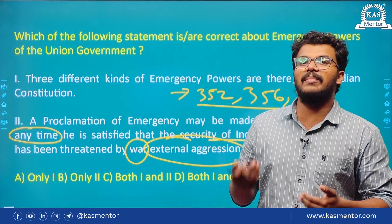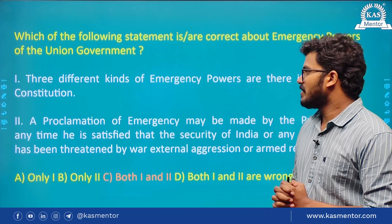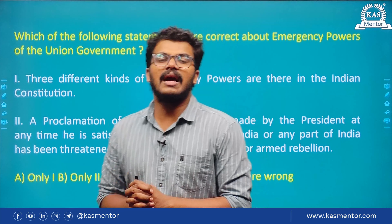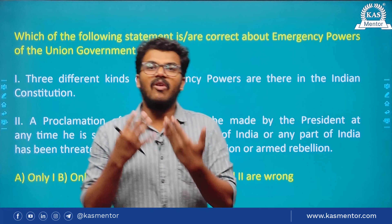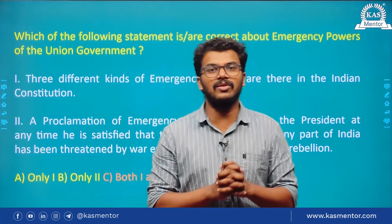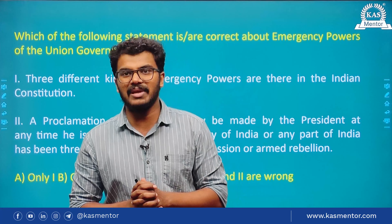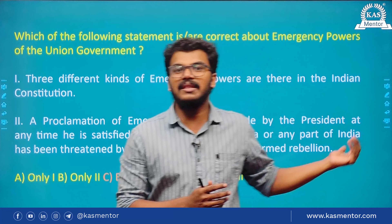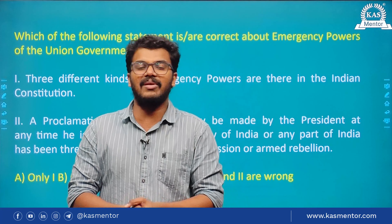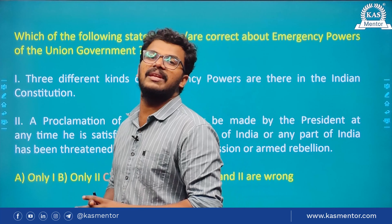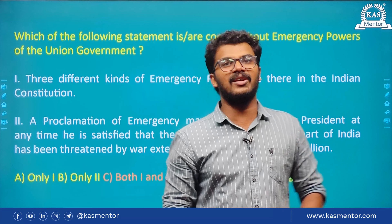The answer is C. In the original constitution, the grounds were war, external aggression, or internal disturbance. This was the ground used in the 1975 emergency. The 44th Amendment Act of 1978 changed the ground from 'internal disturbance' to 'armed rebellion.' Also, there must be a written recommendation of the Cabinet.